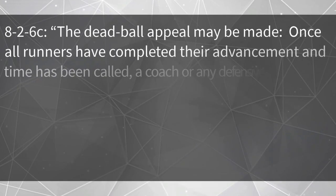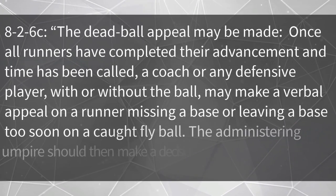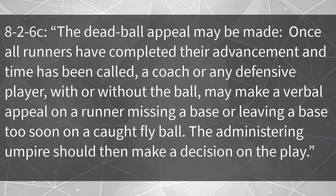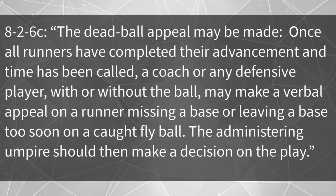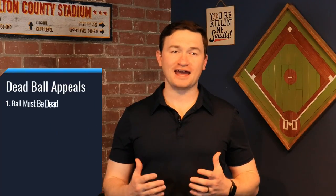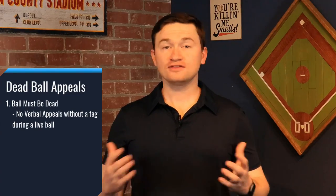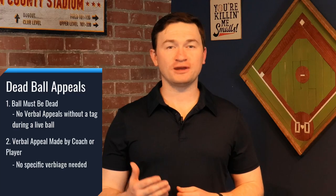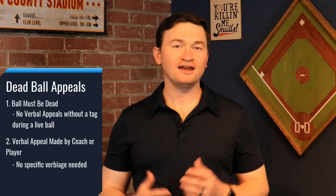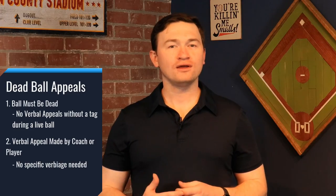The second type of appeal occurs during a dead ball, laid out in rule 8-2-6c. The dead ball appeal may be made once all runners have completed their advancement and time has been called. A coach or any defensive player, with or without the ball, may make a verbal appeal on a runner missing a base or leaving a base too soon on a caught fly ball. The administering umpire should then make a decision on the play. The rule does not give any specific verbiage or even require a coach to come out of the dugout to make the request. If they get your attention as wanting to appeal, we need to make a call.